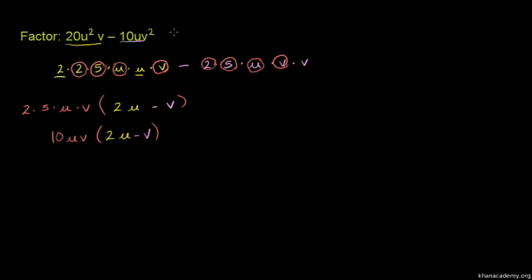So expanding 10uv(2u - v) gives us 20u squared v minus 10uv squared, which matches our original expression.